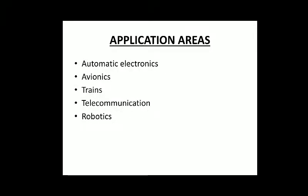What are the application areas of embedded systems? Automatic electronics, that is electronic devices that work automatically. Avionics means flight systems like missiles or planes, trains, telecommunication, and robotics — all these areas need embedded systems to function.